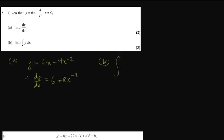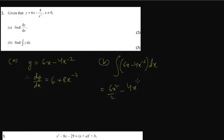Question 2b is integration. Integrating y, which is 6x minus 4x to the power minus 2. Integration means the power increases by 1. So 6x gives 6x squared over 2, then minus 4 times x to the power minus 2 plus 1, that is x to the power minus 1 divided by minus 1. This power is repeated downstairs, and we add plus c. Simplifying: this gives 3x squared, and the two minus signs cancel to give plus 4x to the power minus 1 plus c.